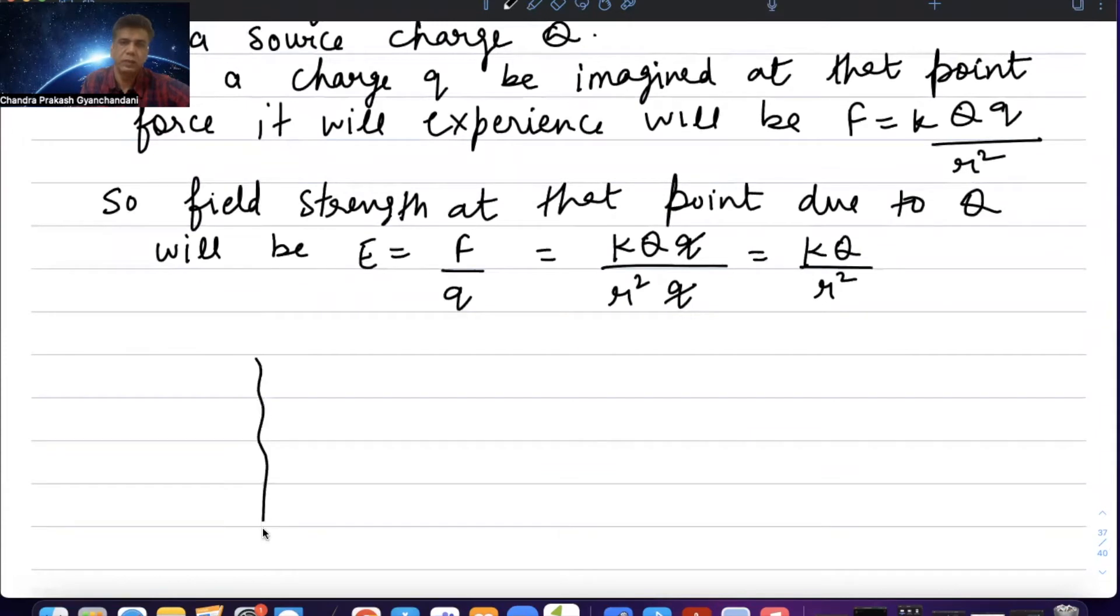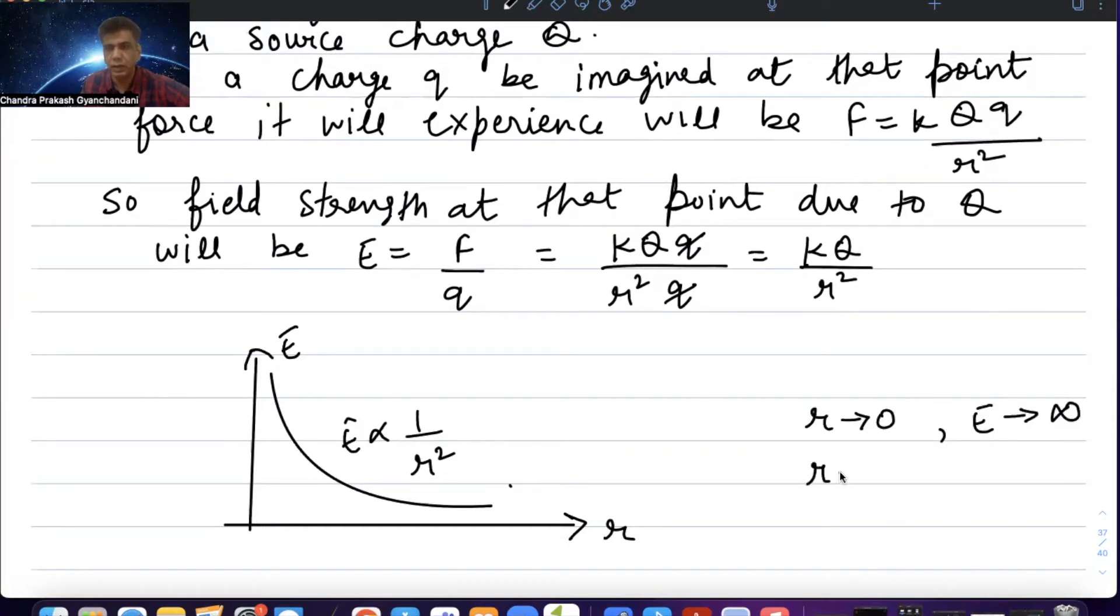Here is the inverse square law. E proportional to 1 over r squared. When r tends to zero, field will tend to infinity. When r tends to infinity, field will tend to zero. When the charge is not very close, field is negligible.